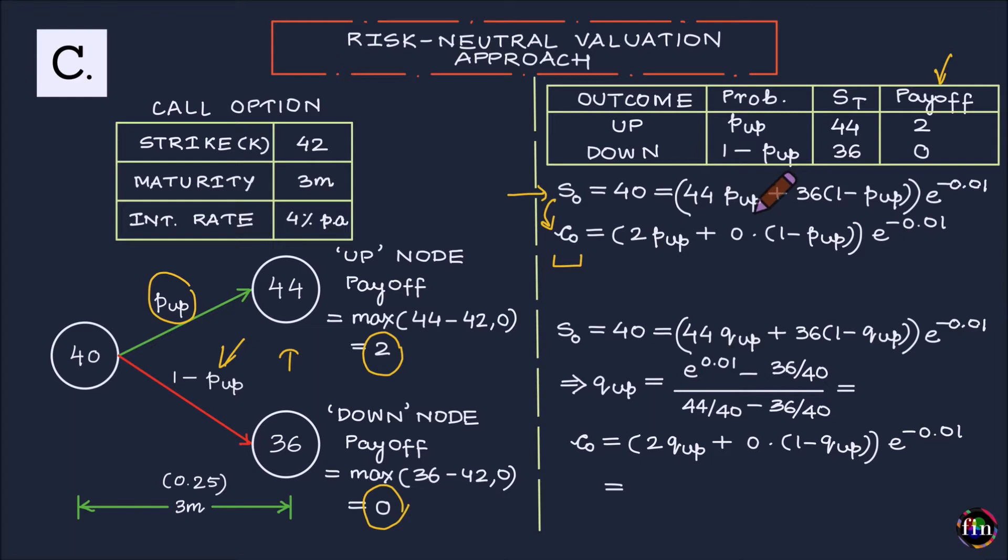The reason is that in the market, we assume that you have many risk-averse investors. These investors, they know that what is being discounted is not a certain cash flow. What is being discounted is the expected value of an uncertain cash flow. And this discounting is happening at the risk-free rate of interest.